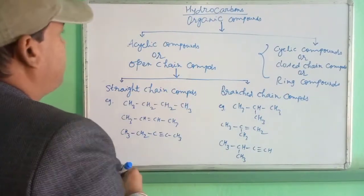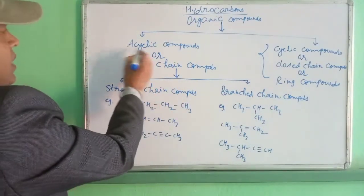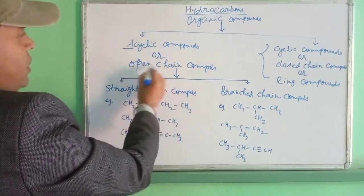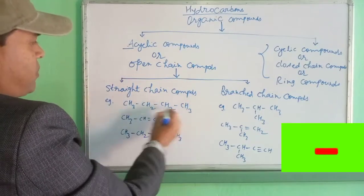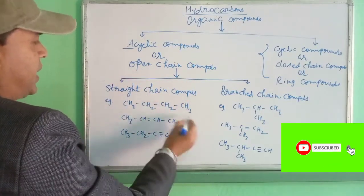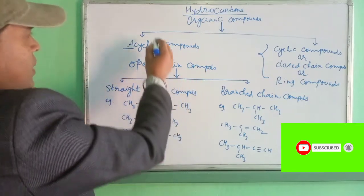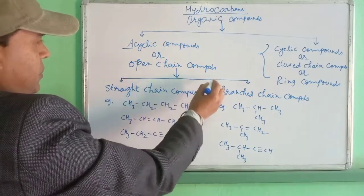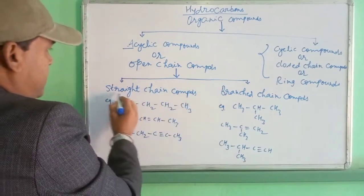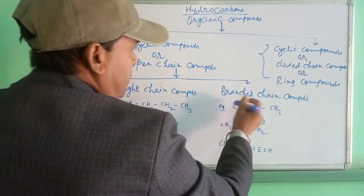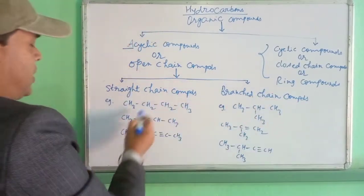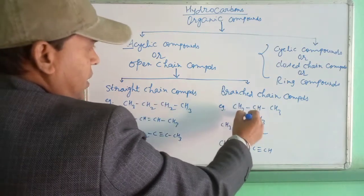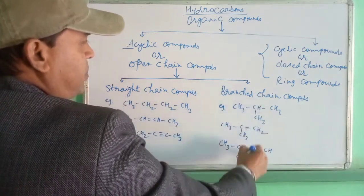Now, acyclic — 'a' means not cyclic — or open chain compound means the ends of the compound are free. Acyclic or open chain compound is further divided into two subclasses: straight chain compound or branch chain compound. Here are three examples of straight chain compound and also three branch chain compound examples.